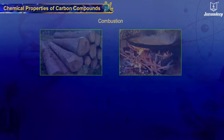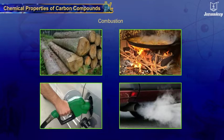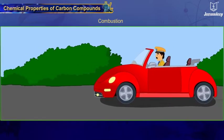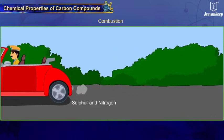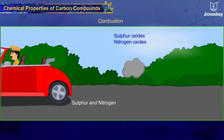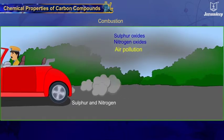The fuel used at home, in vehicles, etc. consists of hydrocarbons which burn in air providing energy for the related task. Hydrocarbons used in fuel for vehicles also contain sulphur and nitrogen, which form their corresponding oxides when burnt in air. These oxides cause air pollution.